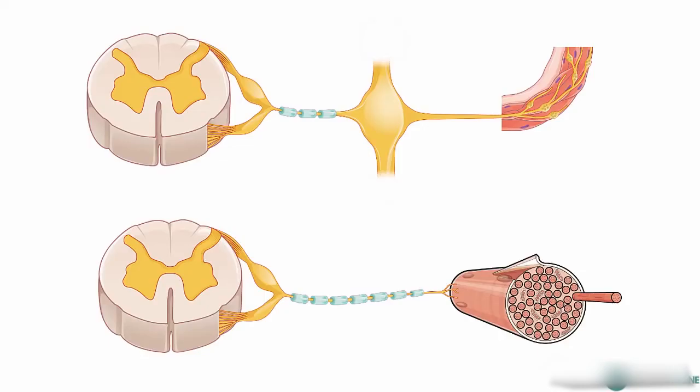What we're looking at here in the bottom diagram is a representation of the somatic nervous system, and on the top we've got a representation of the autonomic nervous system.